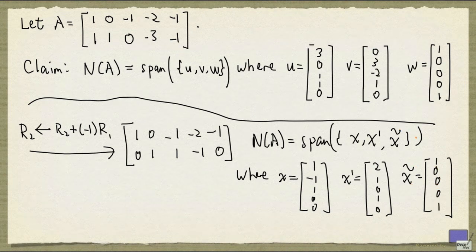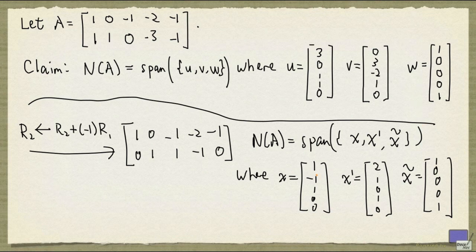As you can see, x tilde is the same as w. But x and x prime are not the same as what we have up here. So what can we do now?